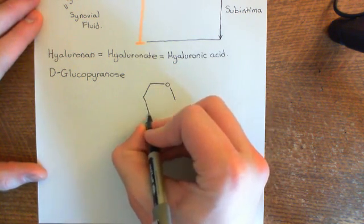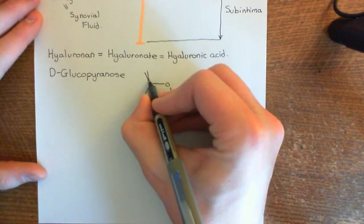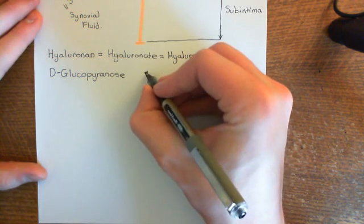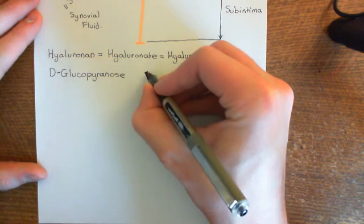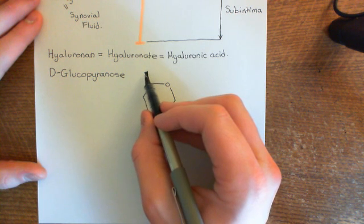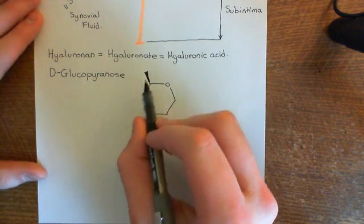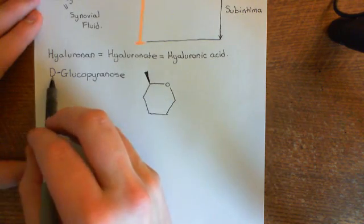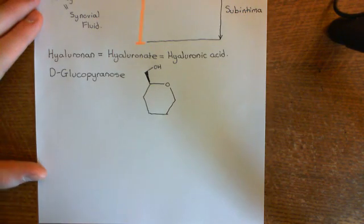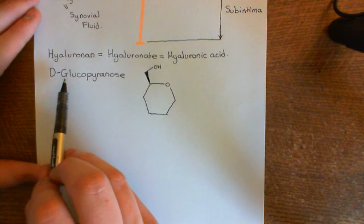Strictly speaking, we need to tell ourselves which optical isomer we're talking about, so we need the D there as well. In D-glucopyranose, this is the six-membered ring, and then the sixth carbon comes off up here coming out of the page towards us. In D-glucopyranose, this sixth carbon is going to come out of the page towards us — and this sixth carbon has an alcohol group off it. In L-glucopyranose, this sixth carbon would go into the page away from us. So it is important to stress that this is D-glucopyranose.